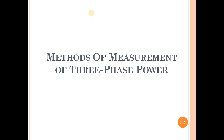For star connection: phase voltage VPH equals VL divided by root 3, or line voltage VL equals root 3 times VPH. For delta connection, the relation is opposite: phase voltage VPH equals line voltage VL, and phase current IPH equals IL divided by root 3. These are the star and delta relations.